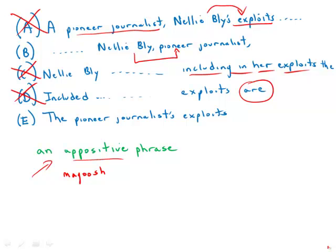Answer choice E is really strange. The pioneer journalist's exploits of Nellie Bly. So it sounds like we're saying that Nellie Bly wasn't necessarily a journalist, but the exploits she had were exploits of a pioneer journalist.